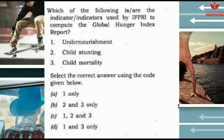Another 2016 question asked: 'Which of the following are the indicators used by IFPRI to compute the Global Hunger Index?' The options were: 1. Under-nourishment; 2. Child stunting; 3. Child mortality. The correct answer is Option C — all three (1, 2, and 3) are correct indicators. Please mention in the comment box where the headquarters of the International Food Policy Research Institute (IFPRI) is located.